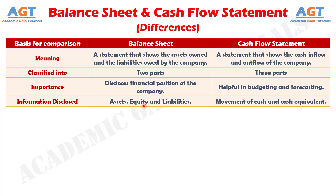No. 4: Information disclosed in Balance Sheet includes assets, equity, and liabilities. On the other hand, information disclosed in Cash Flow Statement includes movement of cash and cash equivalent.